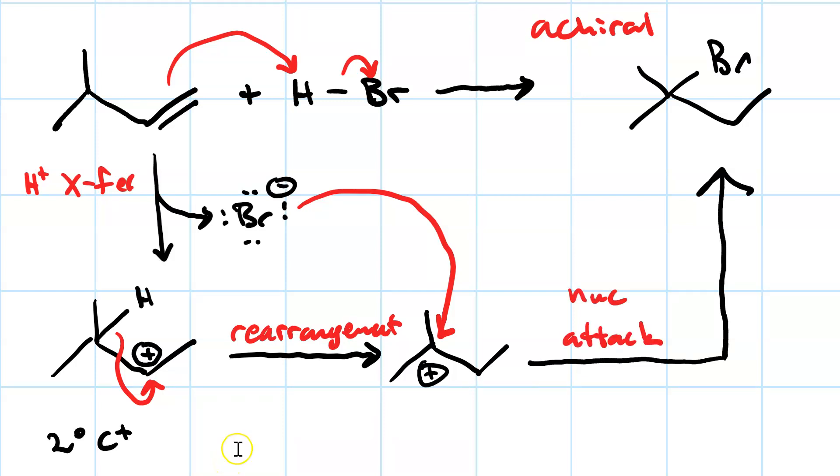Be honest, though. Did you try to do nucleophilic attack without doing the rearrangement? Then you would have gotten a mixture of R and S, 2-bromo, 3-methyl butane. You would have made a chirality center. But the rearrangement product is the major product because it goes through a more stable carbocation intermediate.